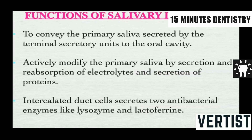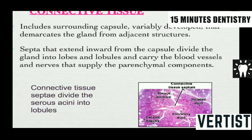The functions of the salivary ducts include conveying primary saliva secreted by the terminal secretory units to the oral cavity, actively modifying primary saliva by secretion and resorption of electrolytes and proteins, and secreting antibacterial enzymes — lysozyme and lactoferrin — via the intercalated duct cells. The surrounding connective tissue capsule divides the gland into lobes, and blood vessels and nerve supply reach the parenchymal components.